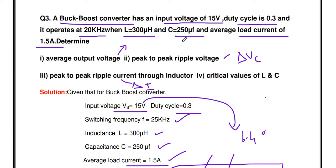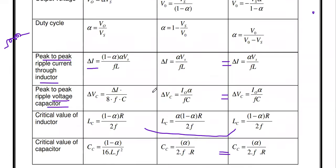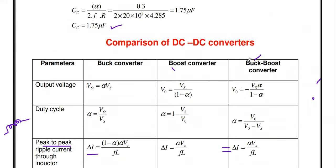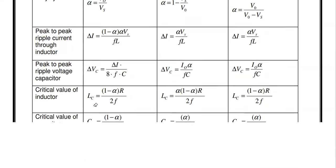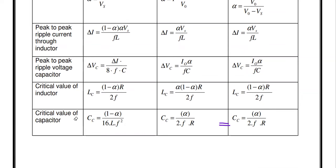If inductor and capacitor values are given, calculate ΔI and ΔVc. If ΔI and ΔVc are given, rearrange the formulas to calculate L and C values. The critical values of inductor and capacitor can be found using their respective formulas. To solve these problems, you must know the comparison table of formulas for all three DC-to-DC converters. Note them in your notebook. These can be asked as smaller two-mark questions or as full large questions.